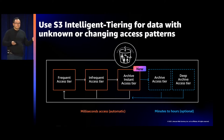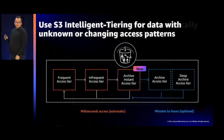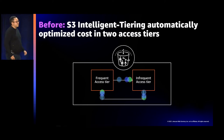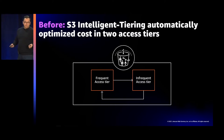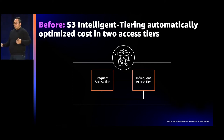Intelligent Tiering will automatically manage cost optimization between access tiers without you having to do anything. In addition, you have optional asynchronous archive access tiers if you want to achieve the lowest storage cost in the cloud for data not accessed for a very long period of time. Before the introduction of the archive instant access tier, Intelligent Tiering worked by charging a small per-object monitoring and automation fee, tracking the access of every single object. After 30 days of consecutive no access, Intelligent Tiering automatically moves those objects to the infrequent access tier. If they're later accessed, they move back to the frequent access tier. When your data access patterns change, there are absolutely no retrieval fees and no impact on performance.